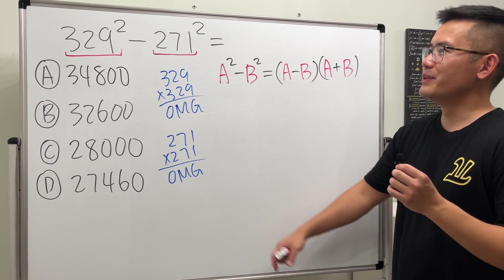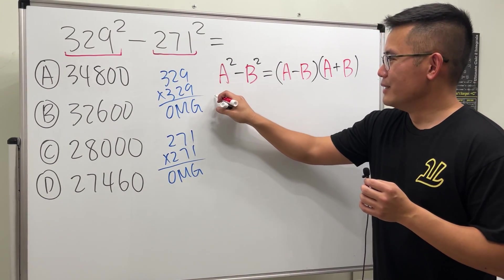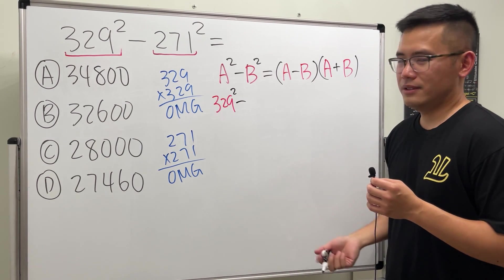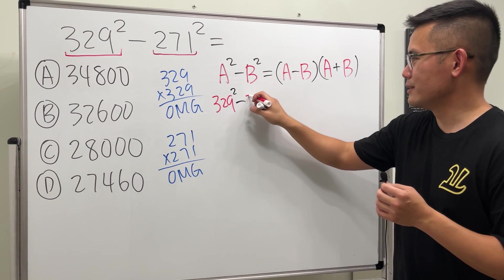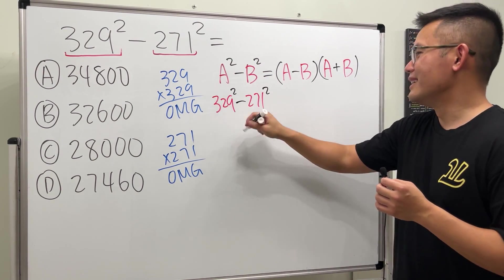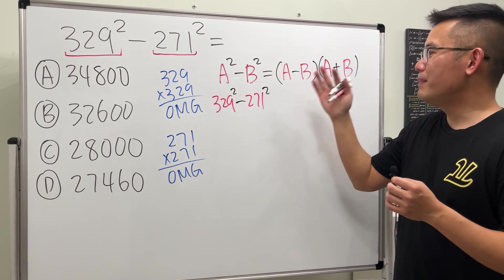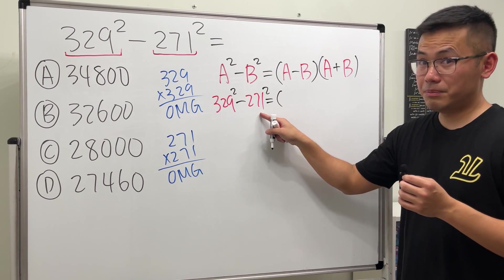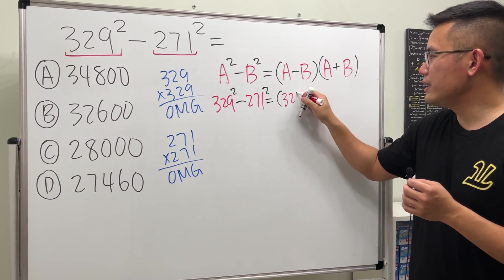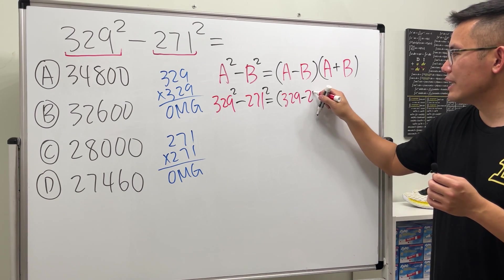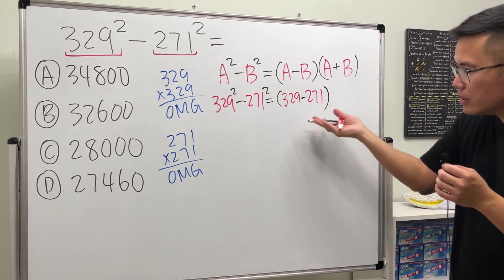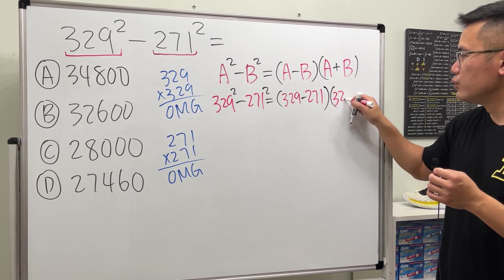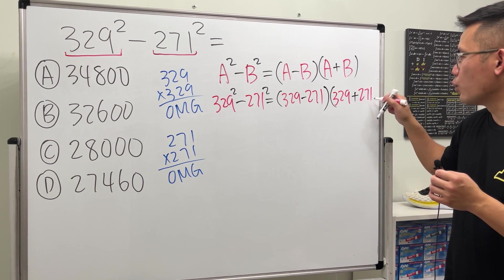Anyway, here we have 329 squared - I'm very sorry, just because if I do the geometry I wouldn't have enough space - but anyway, this is the question. Based on this, what can we do? We can say this right here is equal to a minus b, which we have 329 minus 271, and then we are going to multiply with the result of 329 plus 271.